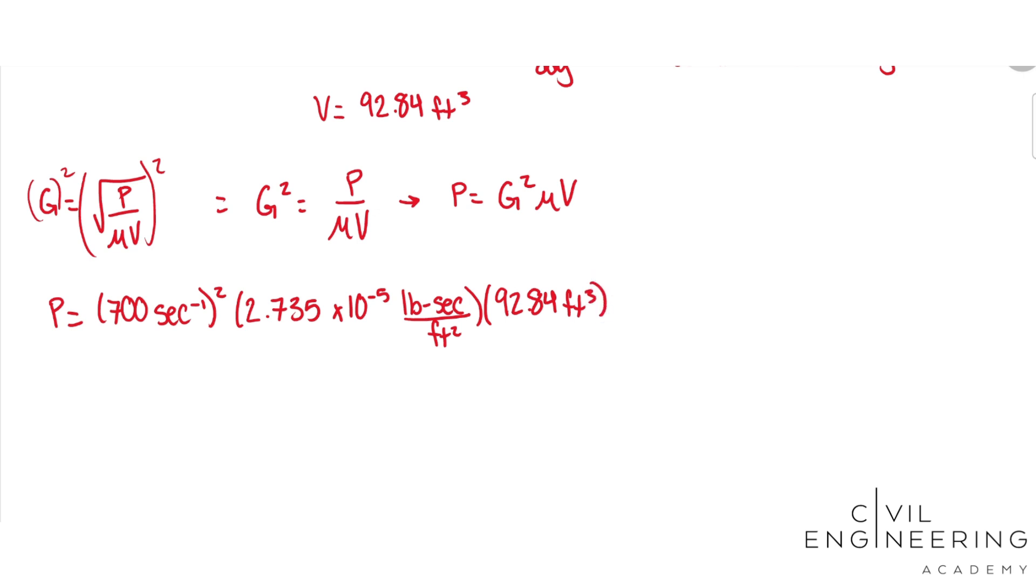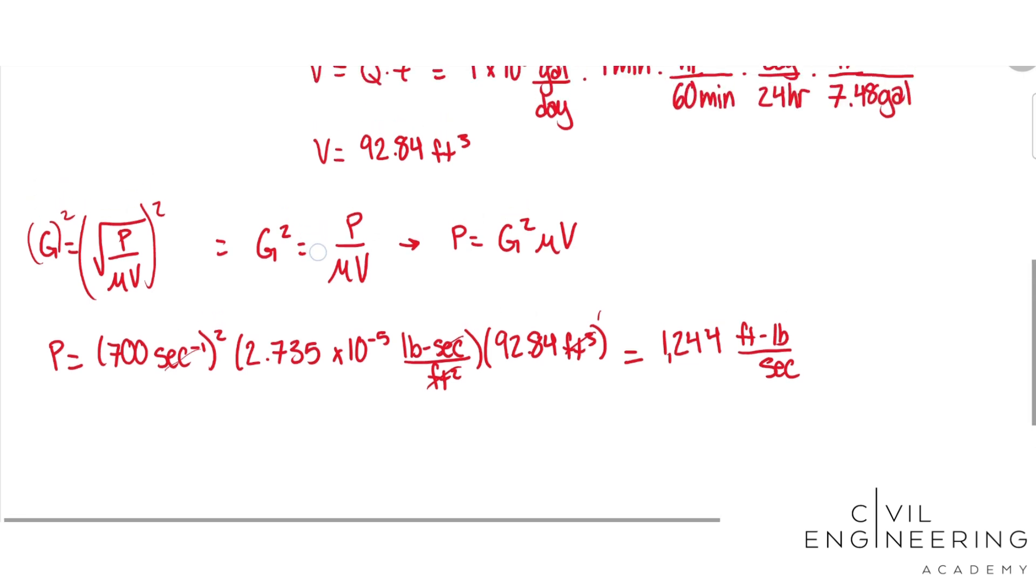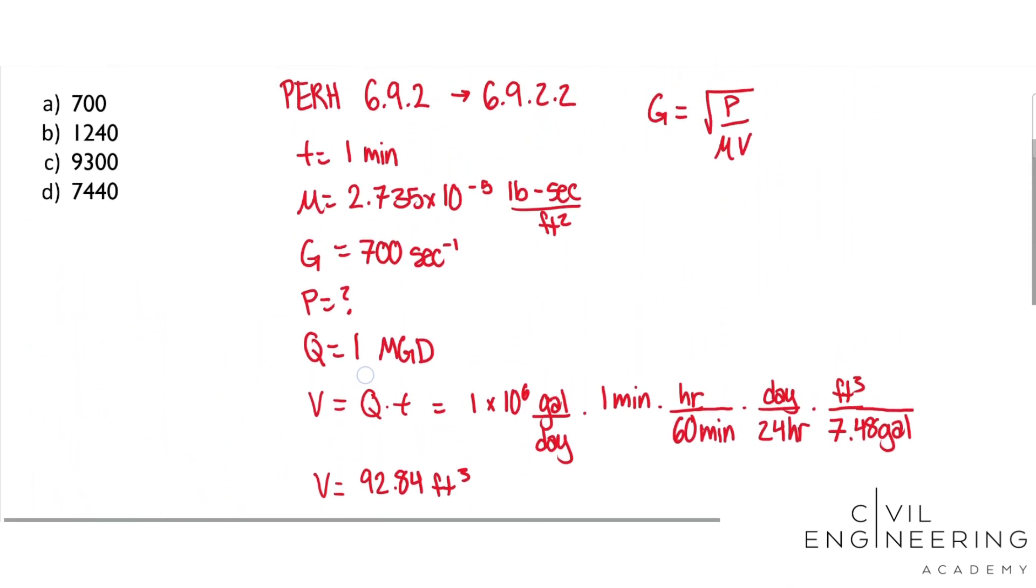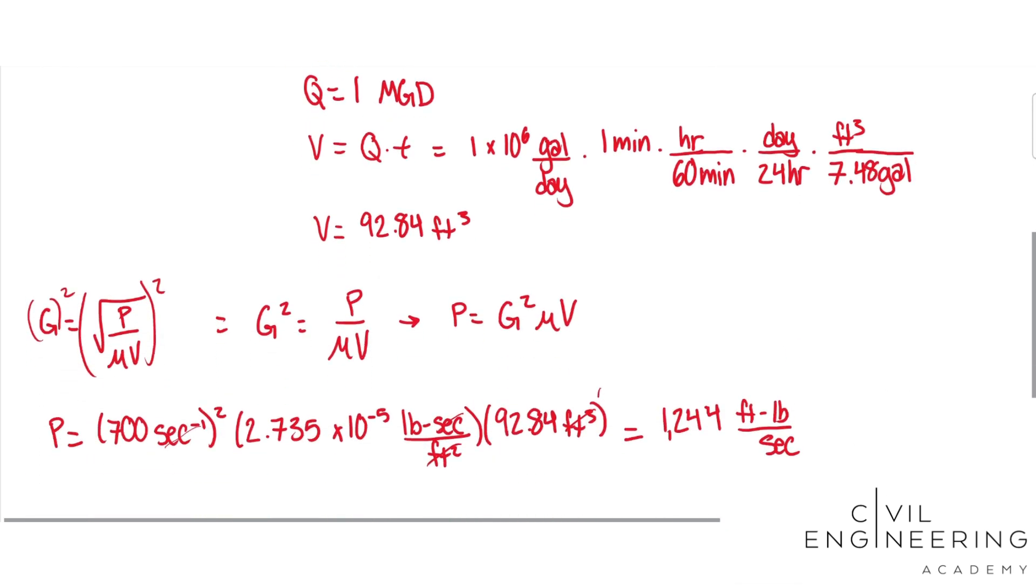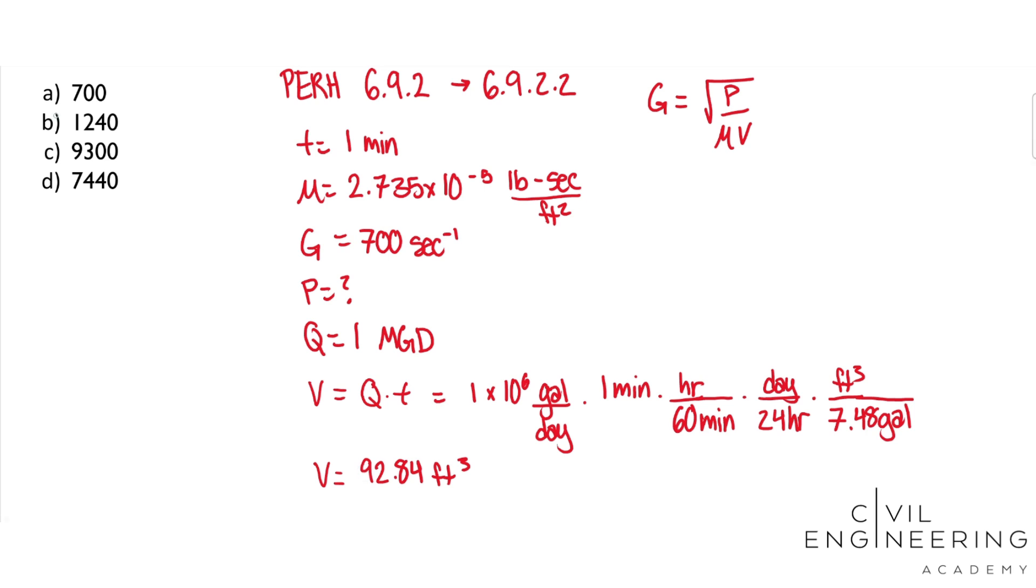So this means our answer is going to be 1,244 foot pounds per second. We got foot squared here, foot cubed, so that's 1 pound stays the same, seconds to the negative 1 squared, but we only have 1 on top, so we'll have 1 left on the bottom. Everything works out there. And let's look back at our answer choices. We got 1,244, so that looks nicely to B, and B is our answer.